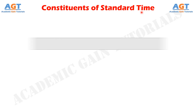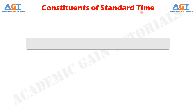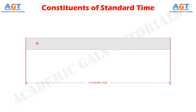Let's look into the basic constituents of standard time through a chart. First of all, we have our standard time. As we said earlier, the observed time and the different allowances are also counted into this standard time. Included into this standard time, there are some unavoidable delays or some allowances for time lost in tool breakage, power failures, etc.